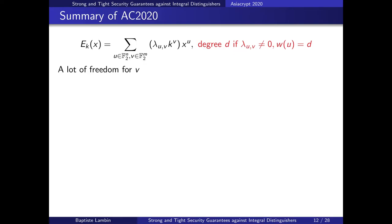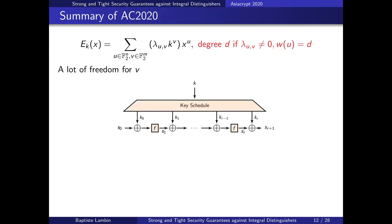The idea is that we have our block cipher E and can write its ANF. Developing the key polynomial p_u results in the expression: a sum of lambda_{u,v} times k^v times x^u. This is of degree d if we can find a u of weight d such that lambda_{u,v} is non-zero. Ideally for a block cipher we want to show it is of maximum degree n minus 1. There are only n vectors of weight n minus 1 for u, but for v there is much more freedom.